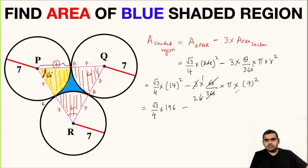If you simplify this: 4 times 4 is 16, 9 is 36, so 49 root 3 minus 49 pi by 2.